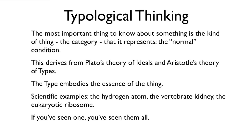If one is thinking typologically, then the most important thing to know about something is the kind of thing that it is — that it represents a normal condition. This is a way of approaching the world that was first really formalized by Plato and Aristotle: Plato's theory of ideals and Aristotle's theory of types.